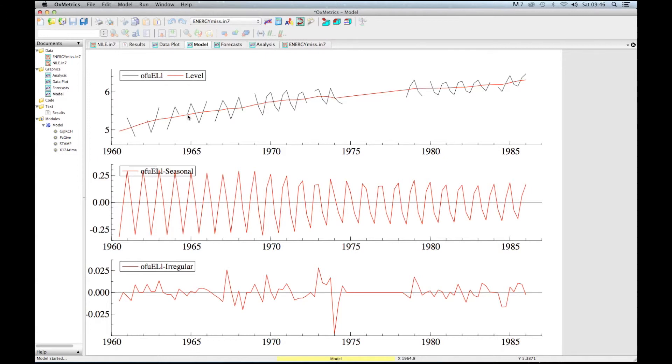And also with the seasonal component, you see, although we have various missing observations, the program is still able to fit the seasonal component. You can see for quarter one and quarter two we have different types of effects.